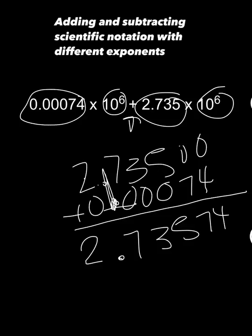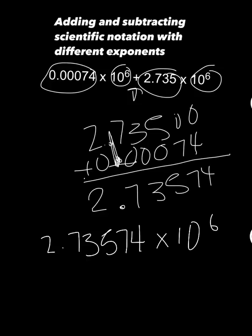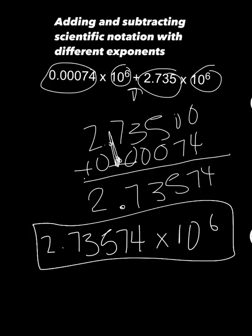So my new decimal point for both numbers added together is 2.73574. I want to remember that when I rewrite my equation. So I'm going to rewrite 2.73574 times 10 to the sixth power. Because remember I changed 10 to the second power to 10 to the sixth power. So the answer to my equation is 2.73574 times 10 to the sixth power.